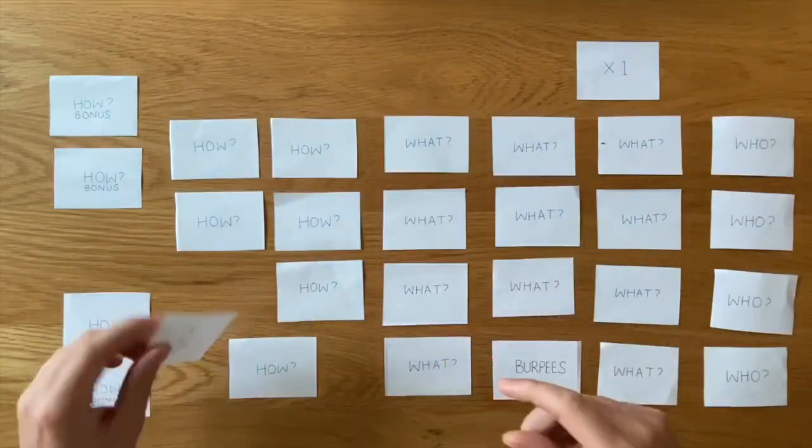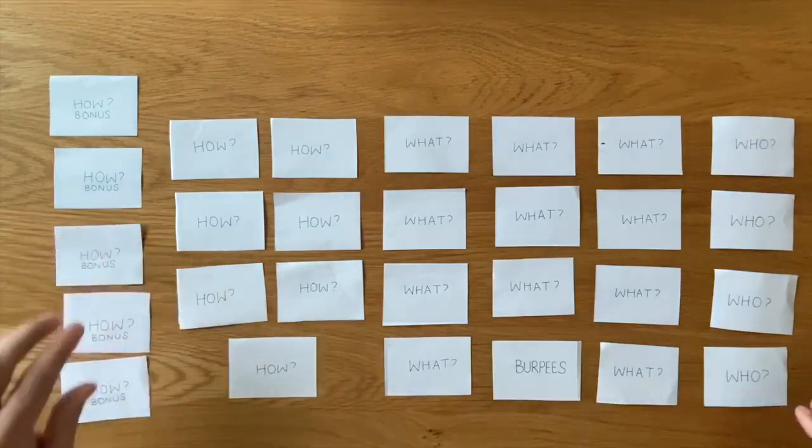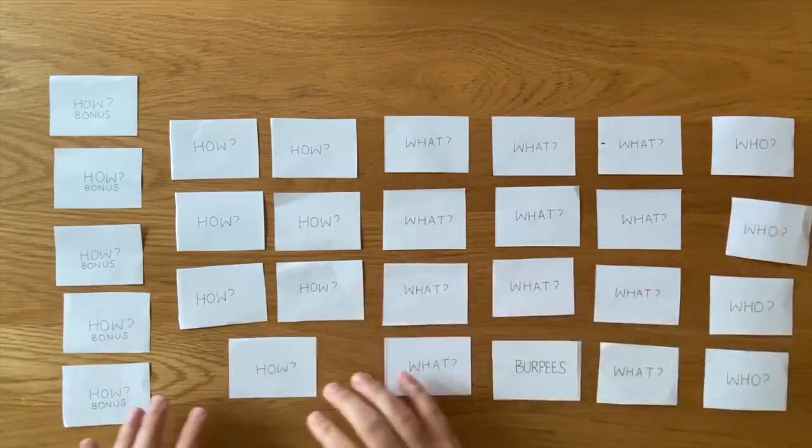Then all the cards go back and we shuffle them. I shuffle everything except from the what card. So I move all the how cards, the how bonus and I move the who cards. Let's move them around a little bit. Okay so everything's been shuffled.